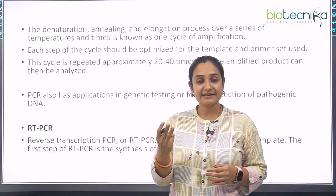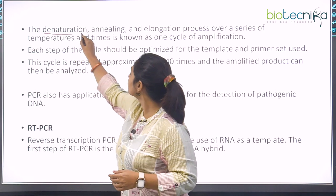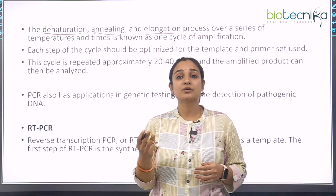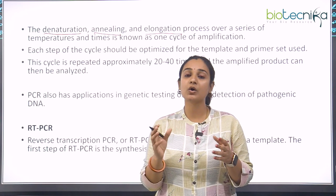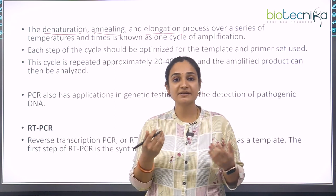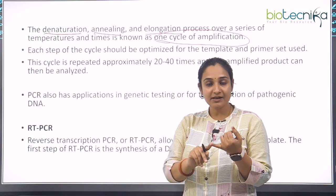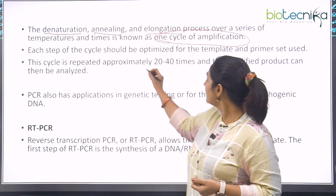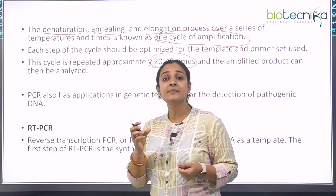There are basically three steps when it comes to PCR. The first one is denaturation, the second one is annealing, and the third one is elongation. For these three steps to take place, there are various cycles and temperatures which are modified according to the template and the primers being used. For one cycle of amplification: denaturation, annealing, then elongation. Each cycle is repeated 20 to 40 times and then the result is analyzed.